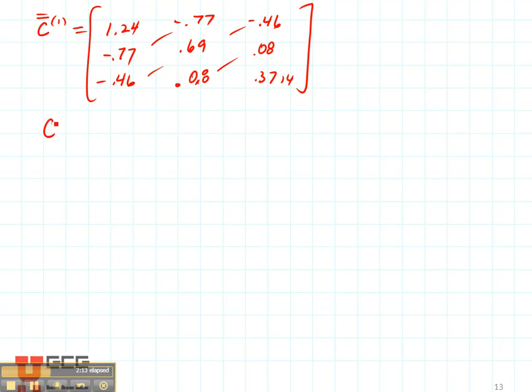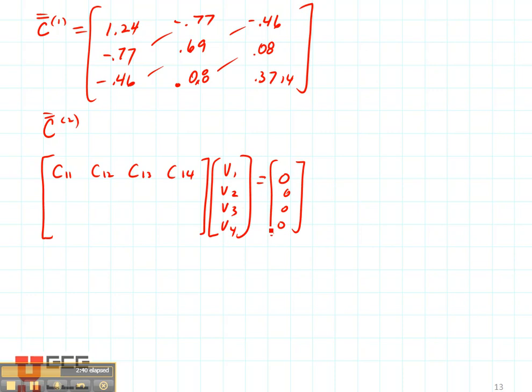Do the same thing to find the elemental coefficient matrix for node number 2. Now we need to assemble the global matrix. So let's consider our four points. We're going to have C11, C12, C13, C14 with four nodal voltages like this and we're going to set that equal to zero, a vector of four zeros.